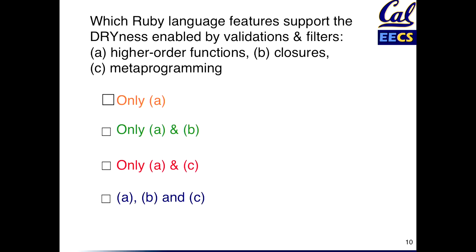So technically the right answer is all three of these contribute, but I feel a little bad putting the question in front of you because I haven't really shown you an example that uses higher-order functions in validations. So in this case, if you said C is a candidate, anything that includes C is correct. And if you said all three, you were also correct. But I will show an example later on of using an actual higher-order function in validation.